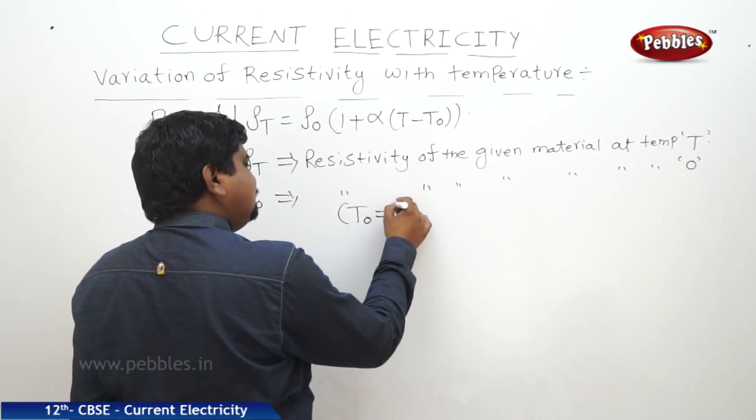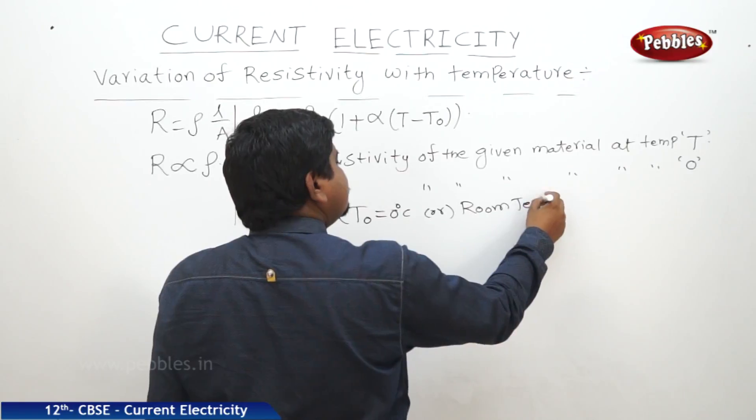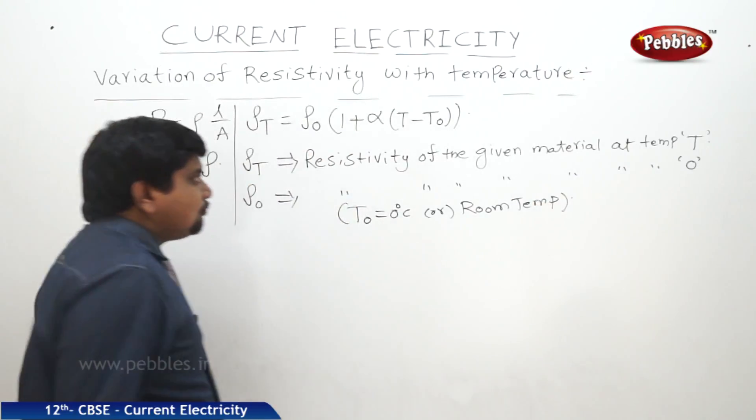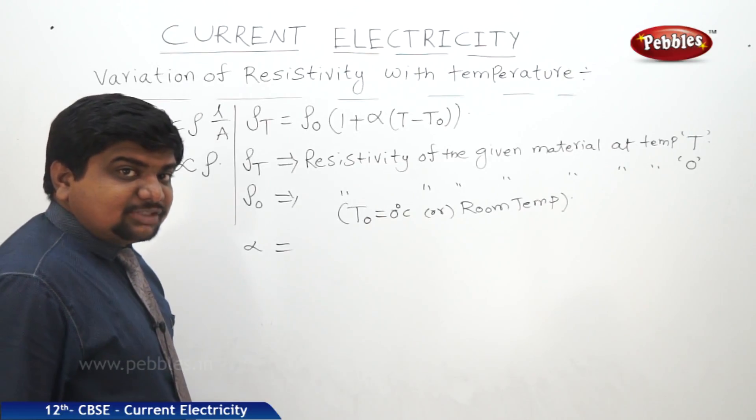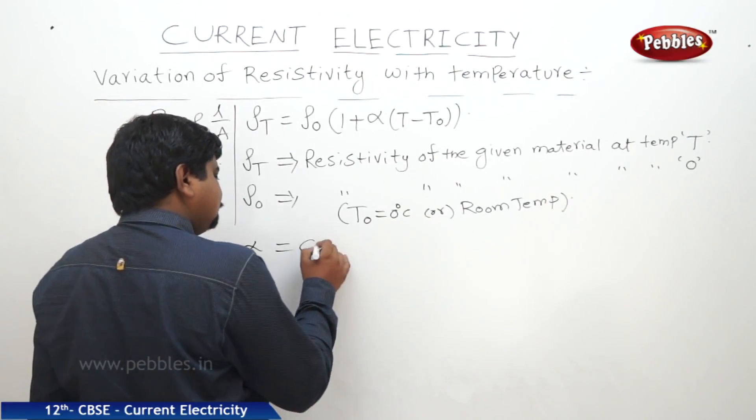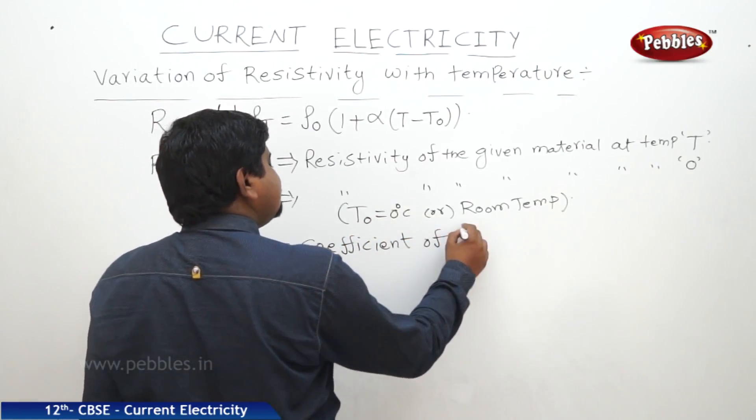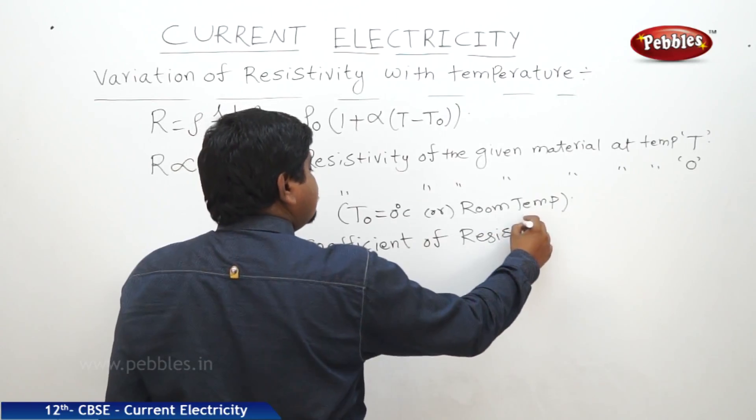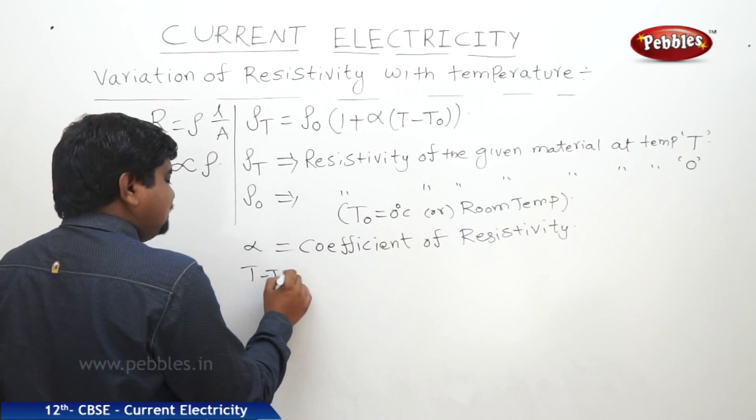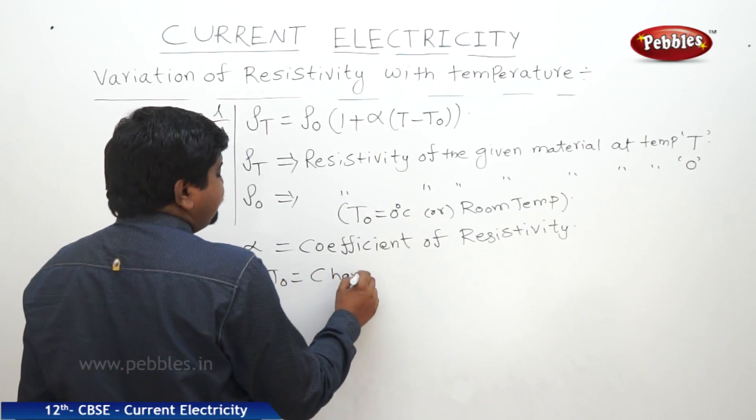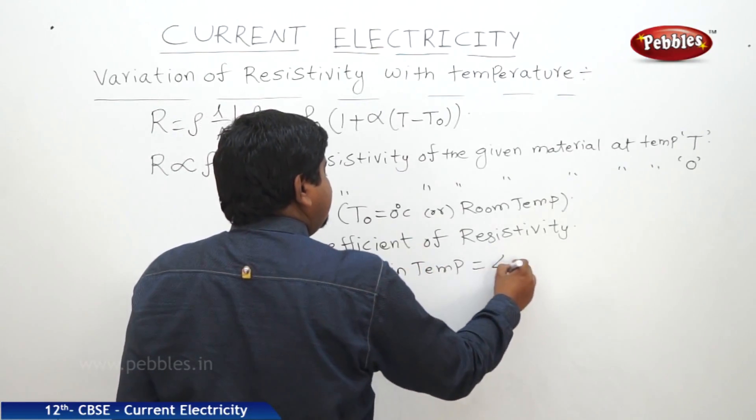α is the coefficient of resistivity with respect to temperature. T minus T0 is change in temperature, also called ΔT.